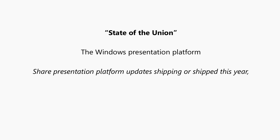We'll talk about some of the feedback we received and what we're doing about that in the 1903 update. We also have WinUI. What we've done based on feedback is we've taken our new controls that used to ship inbox with Windows 10 and lifted them out of Windows, making them work on in-market versions of Windows to make it easier for developers to adopt those. We'll talk about work we've done in WinUI this year, as well as our planned work in both the platform inbox Windows and WinUI for later this year.